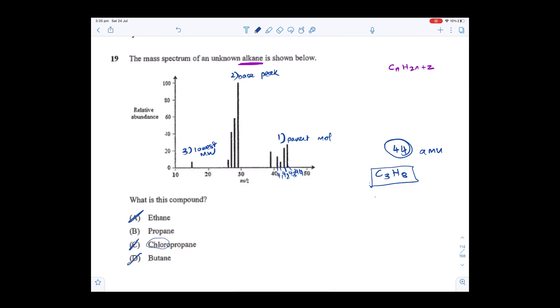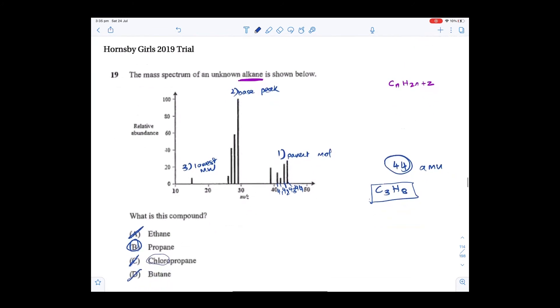Can't be ethane - we know ethane is too small. And so by logical guess, straight away your answer is propane. This is question 19 of a trial paper, too easy.